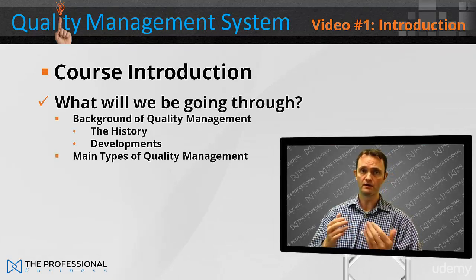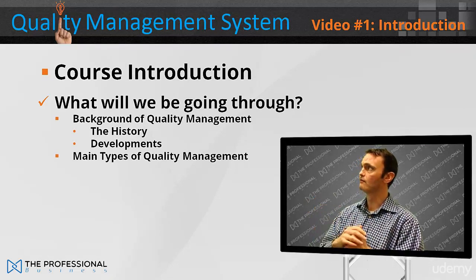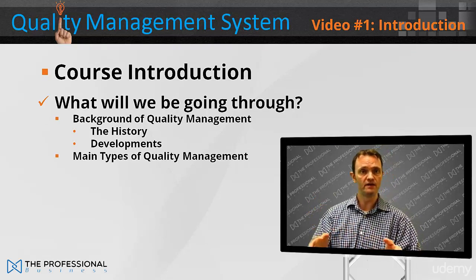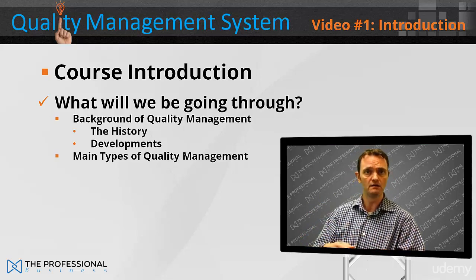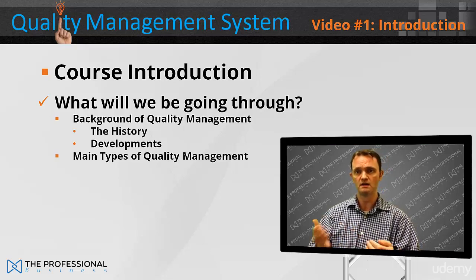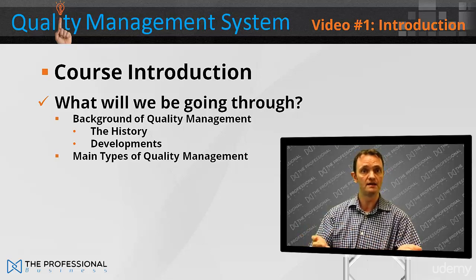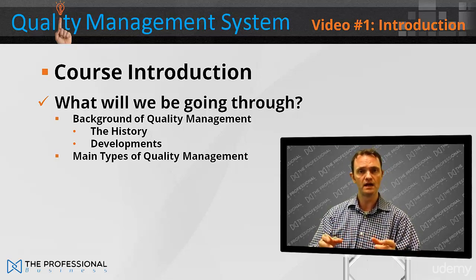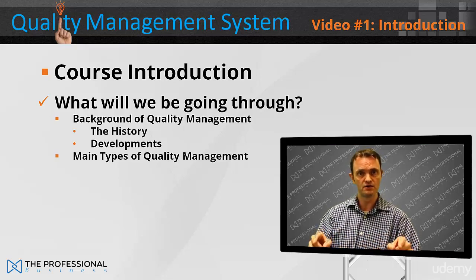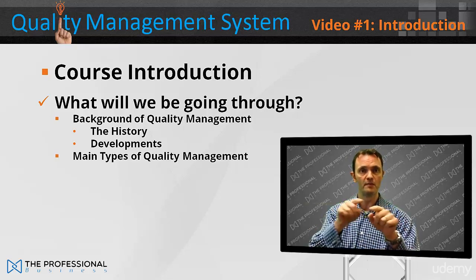What will we be going through? The background of quality management — the history and development. Quality management isn't a fad that's just been around the last 10 years, but it could be traced back at least 100 years to Deming in the United States, as well as the 1940s in Japan with the Kaizen principle — Kaizen being the Japanese for continual improvement. We'll also have a look at the different styles that have spawned from these, to show that the principles all remain the same.